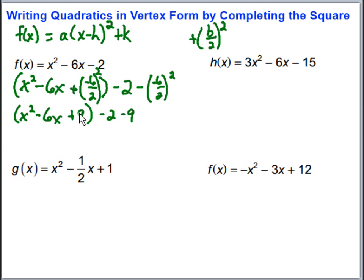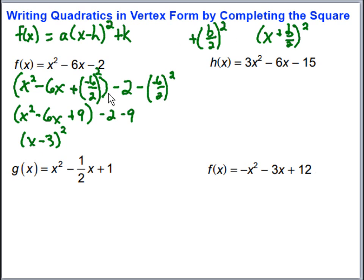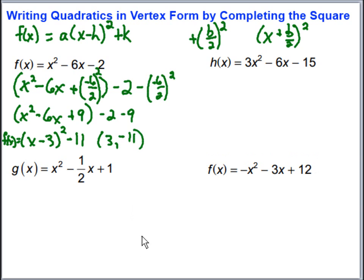The reason we completed the square is because now this factors into a perfect square — exactly what we need for vertex form. It factors into x minus 3 squared, since the b over 2 piece was negative 3. On the outside, negative 2 minus 9 gives negative 11. So f of x in vertex form is the quantity x minus 3 squared minus 11. The vertex is 3 comma negative 11, since the form uses minus h, giving h equals 3 and k equals negative 11.